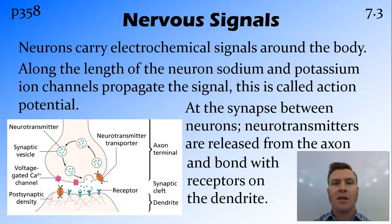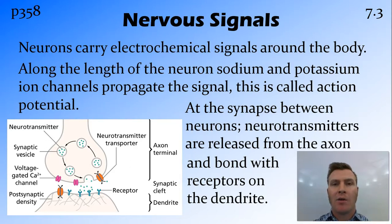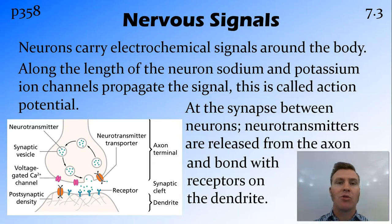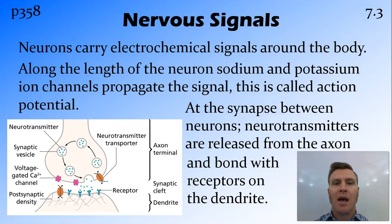We say that neurons carry signals electrochemically, and this is because the change in chemicals results in a change in electricity. The main things moving along the surface of the neuron are sodium and potassium ions, which are positively charged. Between two neurons, we have the synapse, which is a very small gap between the axon of one neuron and the dendrite of another, and across this the communication is purely chemical. Neurotransmitters are released from the axon or the presynaptic terminal, and they travel across the synapse and bind with receptors in the postsynaptic terminal or dendrite.